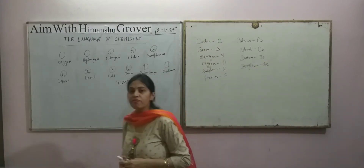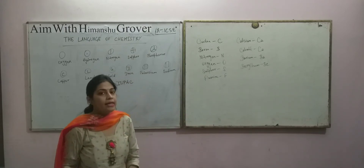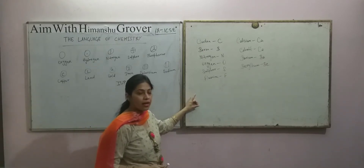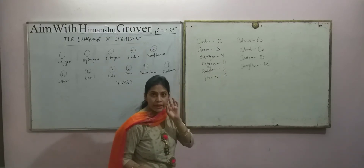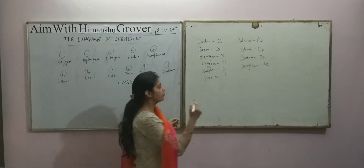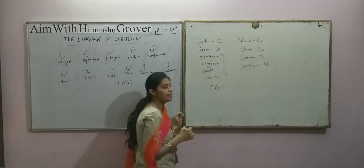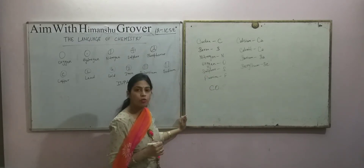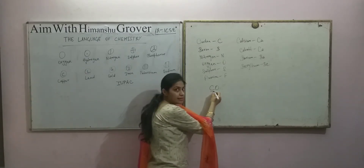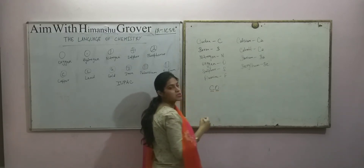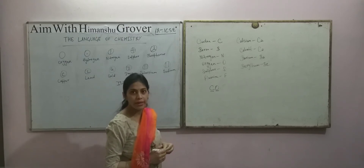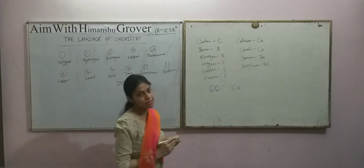Always remember: the first letter should be written in capital and the second one should always be written in small letter. If we write capital C and capital O, then it is no longer cobalt — it becomes carbon monoxide, because the symbol of carbon is capital C and the symbol of oxygen is capital O. But if we write capital C and small o, then it is cobalt.